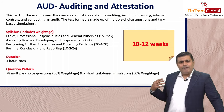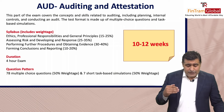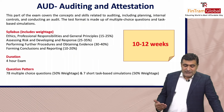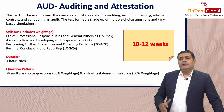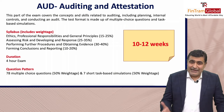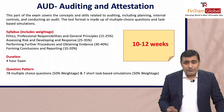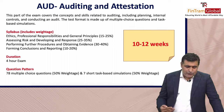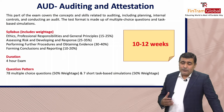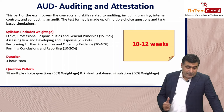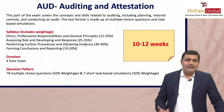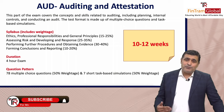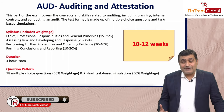For the AUD exam, the syllabus areas and their approximate weightages are: Ethics, Professional Responsibilities and General Principles — 15 to 25%; Assessing Risk and Developing Audit Responses — 25 to 35%, which is very heavily tested; Obtaining Evidence and Performing Audit Procedures — 30 to 40%; and Forming Conclusions and Reporting — 10 to 20%. These four areas together make up the complete audit exam content.